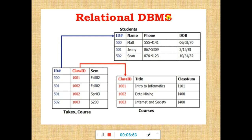This is the relational database management system. There are two databases here — one is a student database, another is a course database. Using these two databases, I created another one database — that is a tech course. This tech course database is now connected or related with the other two tables as well — that is the student table and the courses table. This is an example of a relational database management system.